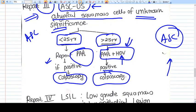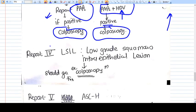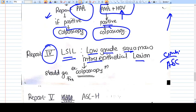Report number four is LSIL—low-grade squamous intraepithelial lesion. Now we have confirmed atypical cells, and we should directly go for colposcopy.